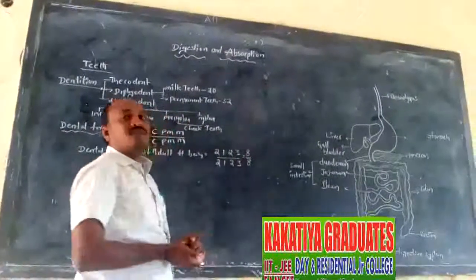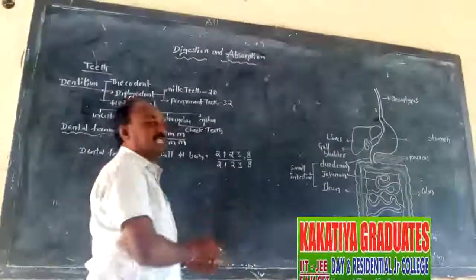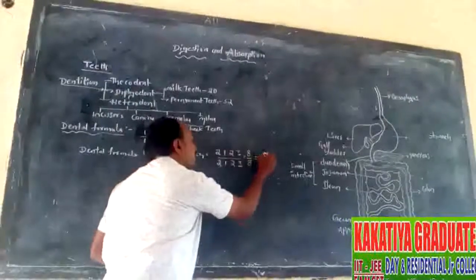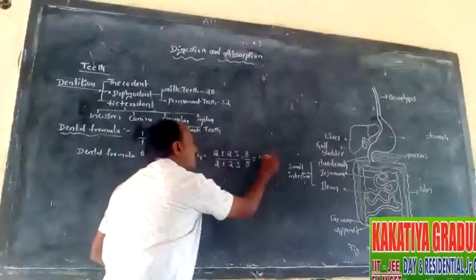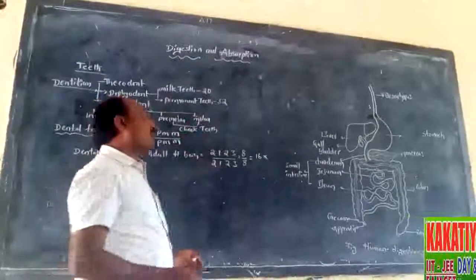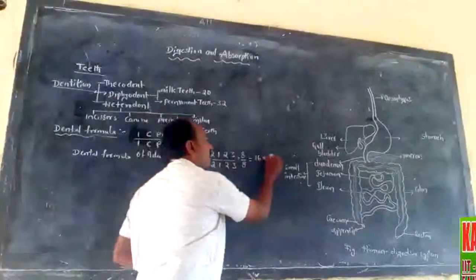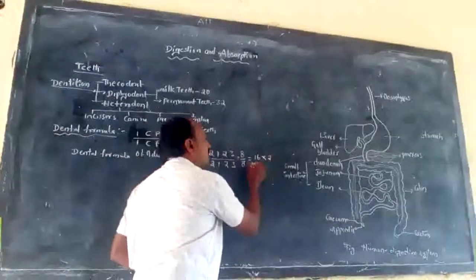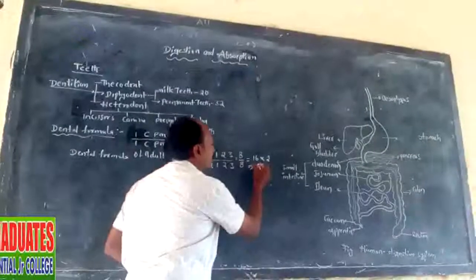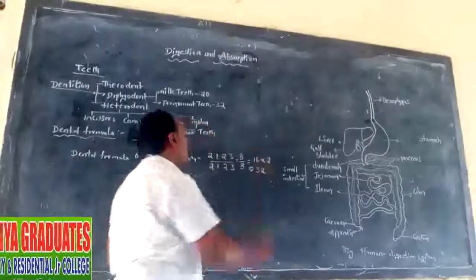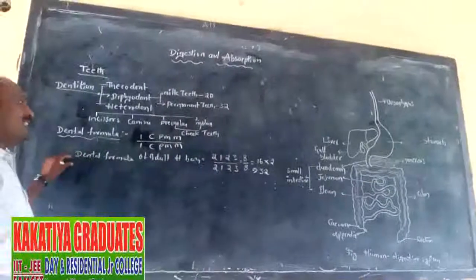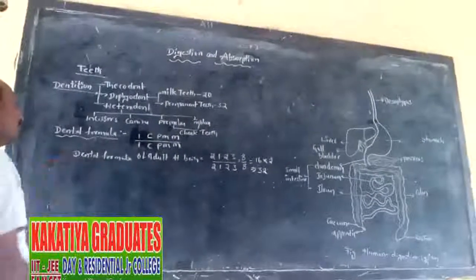Half of the lower jaw also has 8 teeth, so half of the jaw contains 8 plus 8 equals 16 teeth. The other half of the jaw also has 16 teeth, giving 16 plus 16 equals 32. The adult human contains 32 teeth in total.